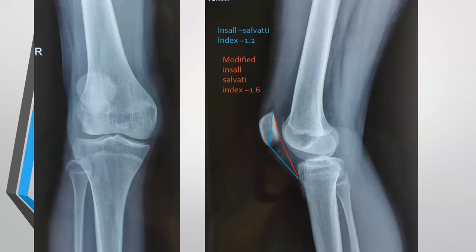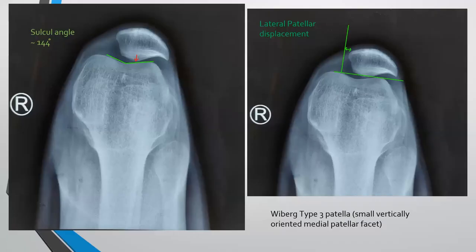This is a plain radiograph AP and lateral view showing the Insall-Salvati index as 1.2 and modified Insall-Salvati index at 1.6. The Skyline-Merchant view depicts the sulcal angle as 144 degrees, and there is lateral patellar displacement. We can see there is a small, vertically oriented medial patellar facet. So, it is a type 3 patella.